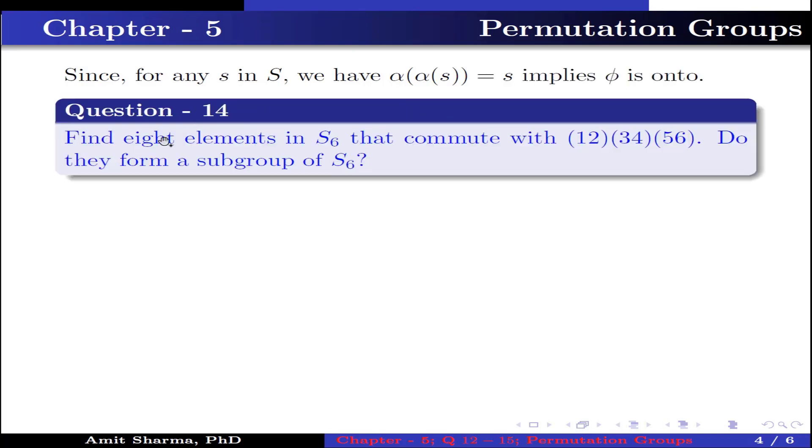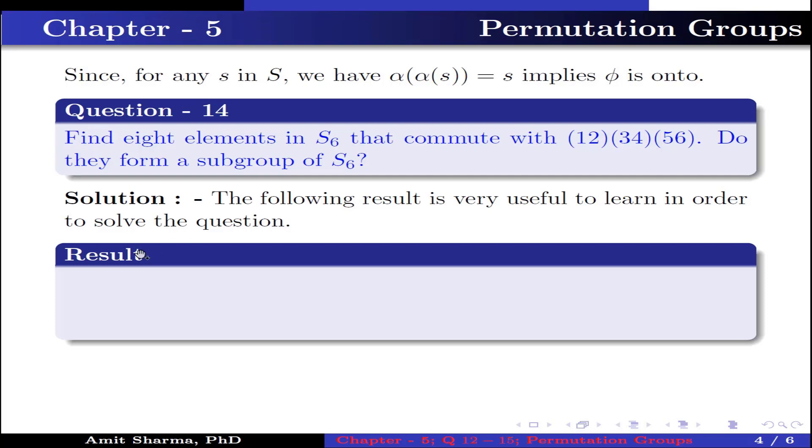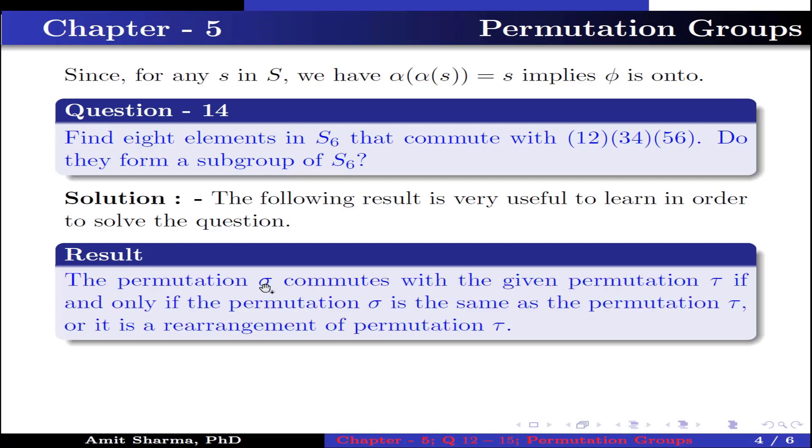Question number 14: Find 8 elements in S₆ that commute with (1,2,3,4,5,6). Do they form a subgroup of S₆? Result: The permutation σ commutes with the given permutation τ if and only if the permutation σ is same as the permutation τ or it is a rearrangement of permutation τ.